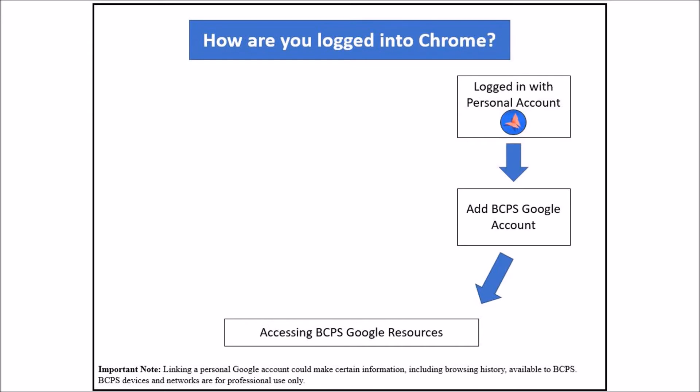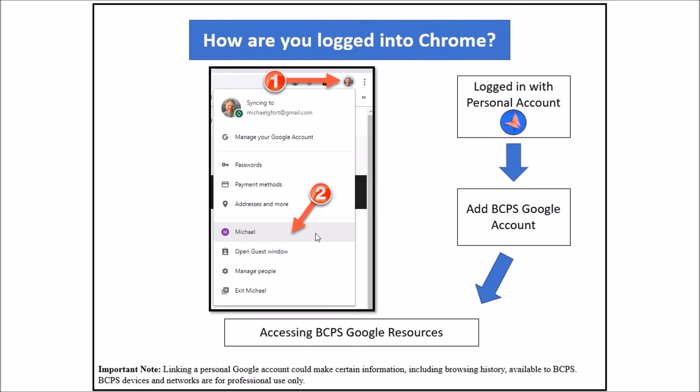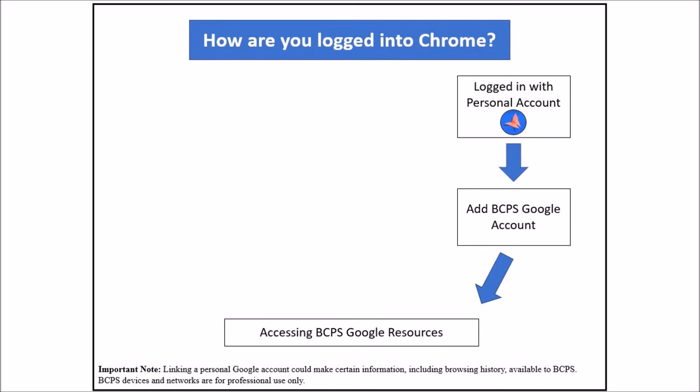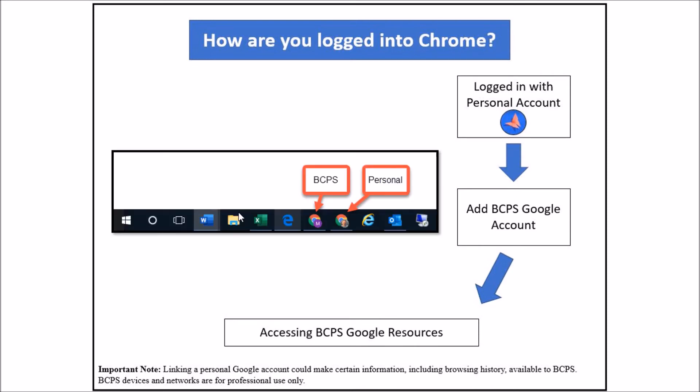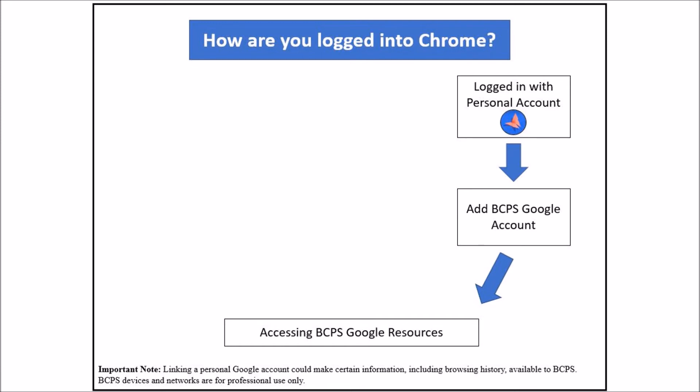To open your BCPS Google account, click the user icon in the top right corner and select the name for the account. Notice that a new instance of the Chrome browser opens — one for each account. Remember, the account that you closed last is the one that will open when Chrome is next opened.